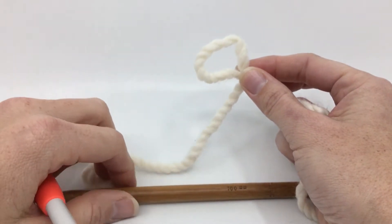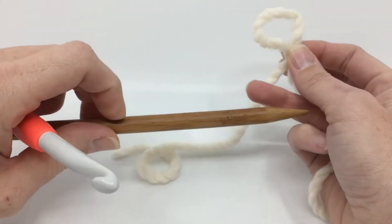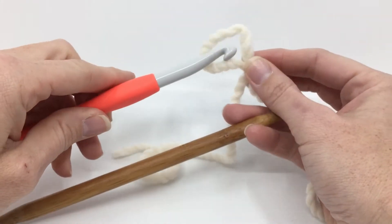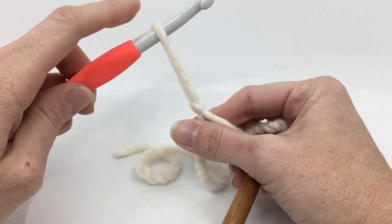Now where does this go? The needle or the hook? For a crochet cast on you put it on the hook and then you're going to tighten it down.